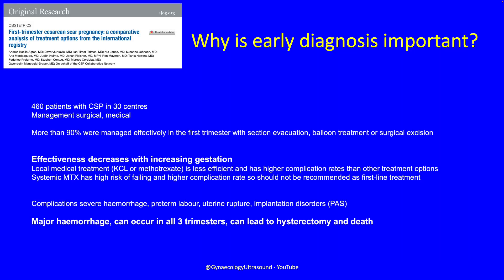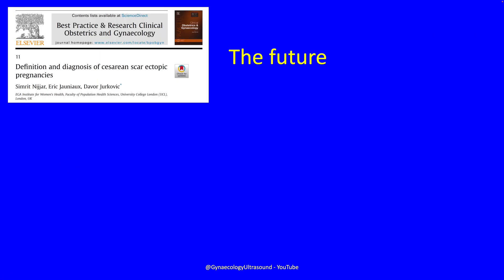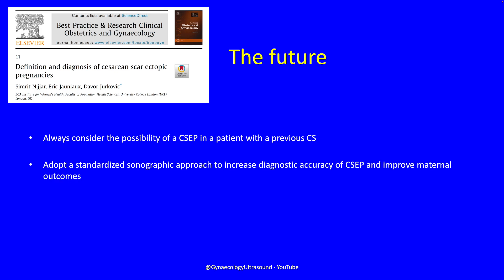So why is early diagnosis so important? In one paper, 460 patients with a scar pregnancy in 30 centres had either surgical or medical treatment — more than 90% were managed effectively with surgical treatment, but as the pregnancy continues, effectiveness decreases. Complications include severe haemorrhage, preterm labour, uterine rupture, and implantation disorders. Major haemorrhage can occur in all three trimesters and can lead to hysterectomy and death. Always consider the possibility of a scar pregnancy in a patient with a previous caesarean section, adopt a standardised sonographic approach, and refer to regional expert centres for confirmation.